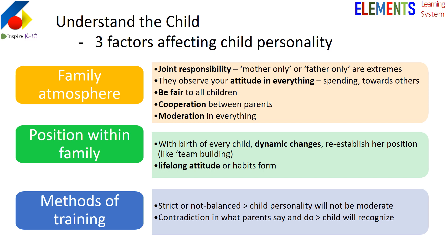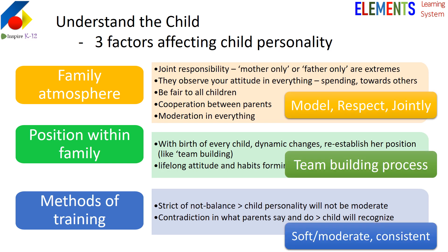The third factor is training. There are many things in training we will discuss in detail later, but the crux is: if we are strict and not balanced, the child's personality will not be moderate. If the child sees contradiction in our behaviors and we are not consistent, children observe, recognize, and learn these things. Adults should model good behavior, respect, and jointly share responsibility — and throughout, be soft, moderate, and consistent in their behavior.